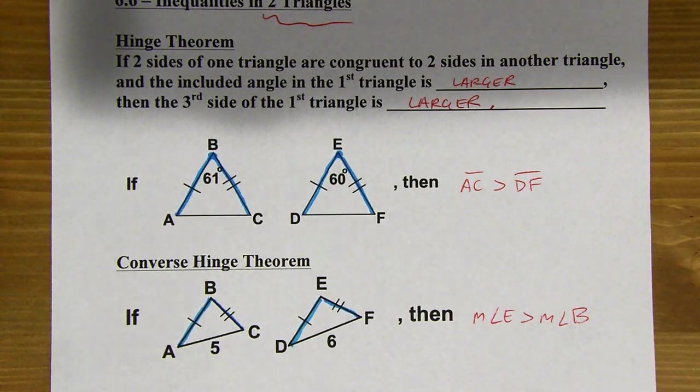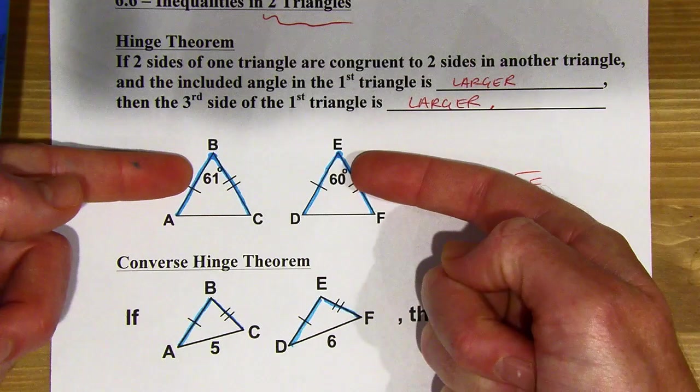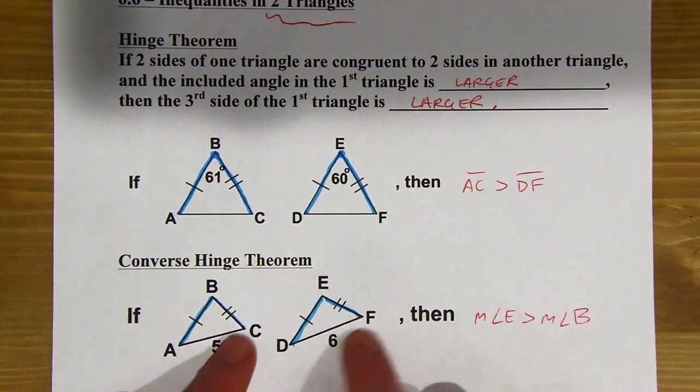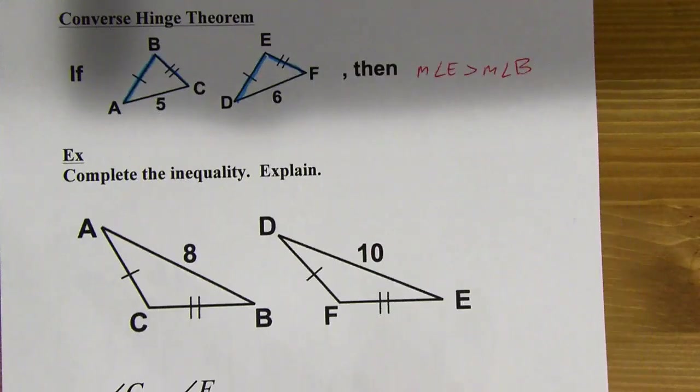So just two different ways to figure out which door is open wider, either with the angles, if you're using the original hinge theorem, or with the third side, if you're using the converse. All right, so let's try this out.